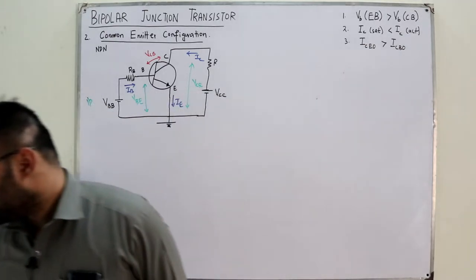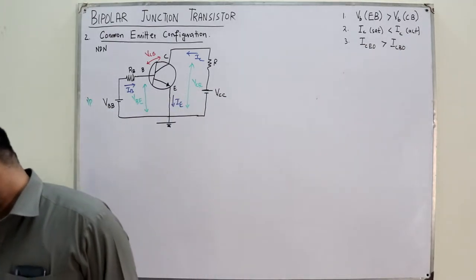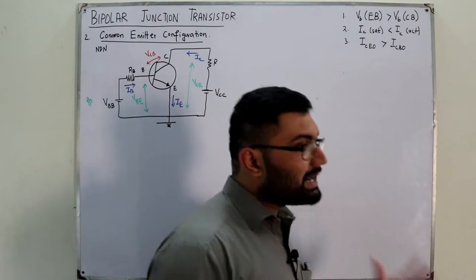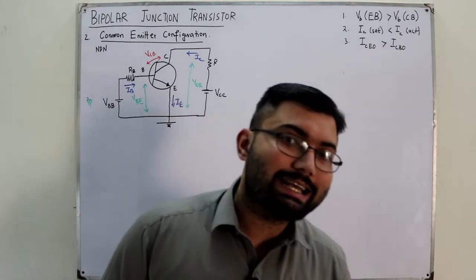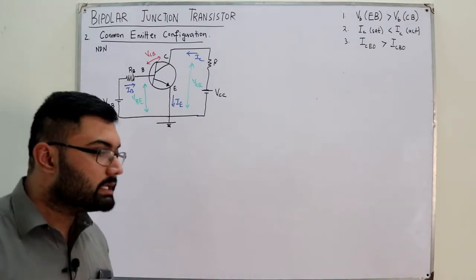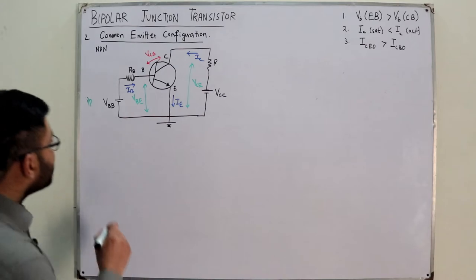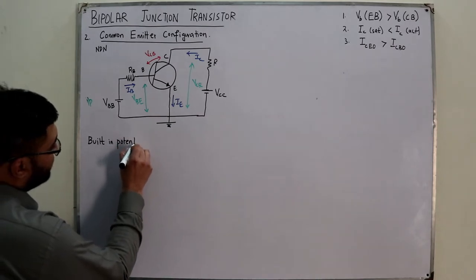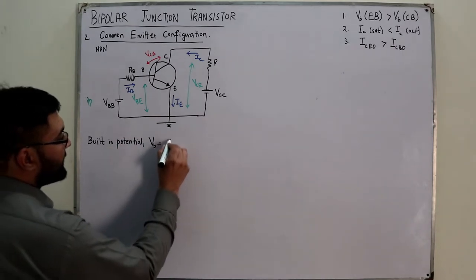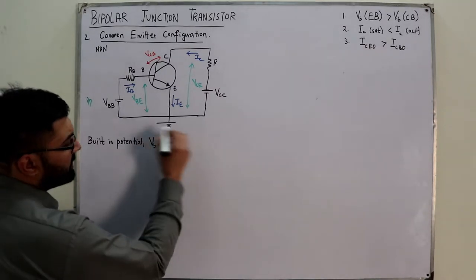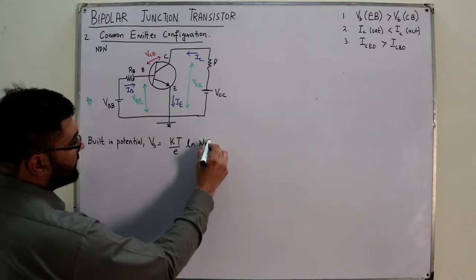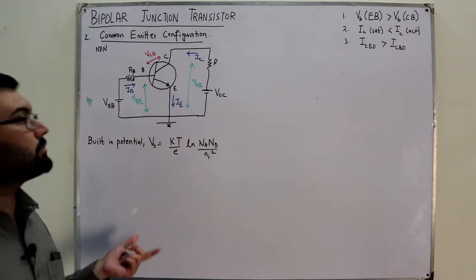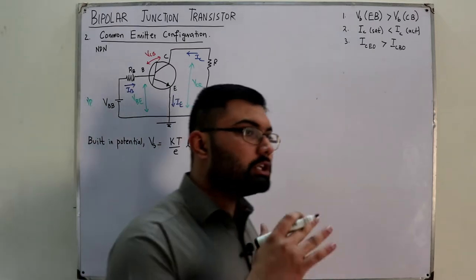The first point: the barrier potential of the emitter-base junction is greater than the barrier potential of the collector-base junction. This is because of the doping level. The built-in potential Vb is given by: Vb = (kT/e) × ln(Na × Nd / ni²). So Vb is directly proportional to the product of the doping concentrations.